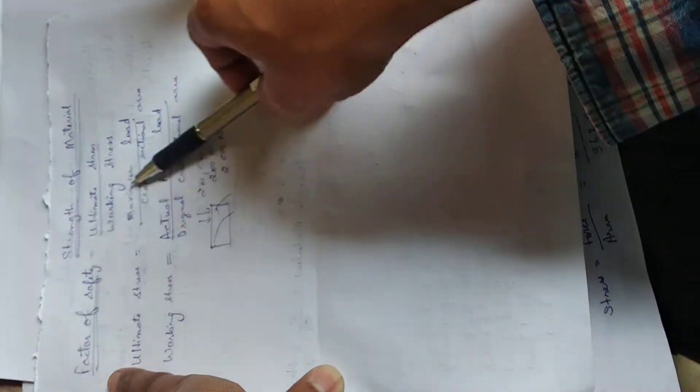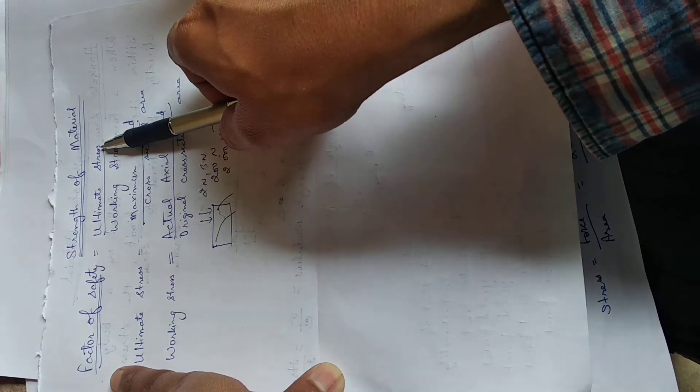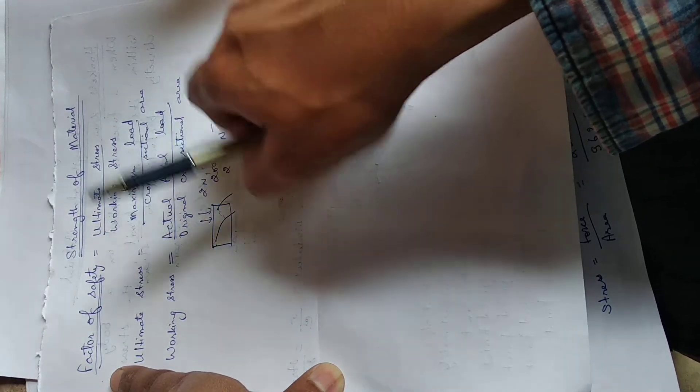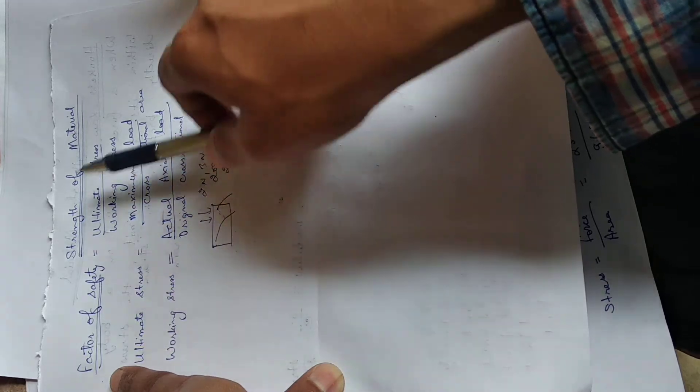What is factor of safety? It is ultimate stress divided by working stress. So now, what is ultimate stress?